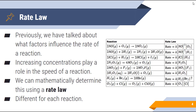We can mathematically determine this by using what is called a rate law, and this is different for each reaction. We can look at the rate and understand that K times the concentration of our reactants actually tells us the rate of our reaction. So the rate law tells us not only how to develop it, but also how to solve — if we know the concentrations of NO and O2 and we know K, we can solve for the rate.